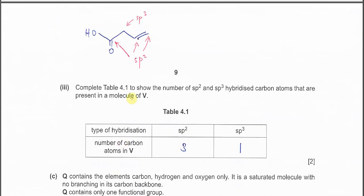Complete the table to show the numbers of sp2 and sp3 hybridized carbons. This is the V. When there is a C=C double bond or carbonyl carbon, the carbon in the C=C double bond and carbonyl group must be sp2 hybridized.